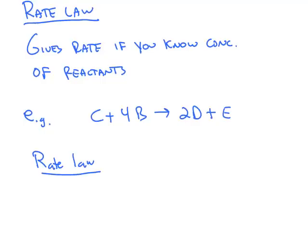The rate law for a reaction gives you the rate at any time of the reaction if you know what the concentrations of the reactants are at that point. So for example, here's an overall balanced reaction: 1C plus 4B makes 2D and 1E.